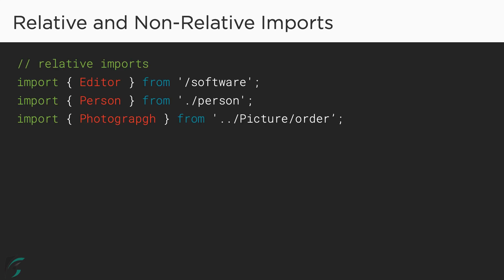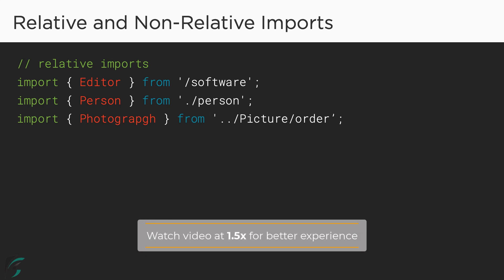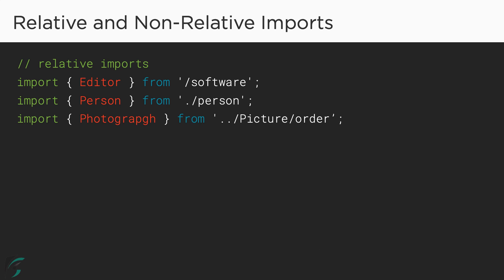These are a few examples of relative imports. Relative imports direct the compiler to a specified location on the file system where it can find the module. Relative references begin with either a slash, a dot-slash, or a dot-dot-slash to direct the compiler to the location of the file. A leading slash tells the compiler the file may be found at the root of the file system. You can leave off the file extension and the compiler will automatically look for files with valid TypeScript extensions. The compiler will look for the person module in the same directory as the current file, or go one directory up and look for modules inside the specified directory.